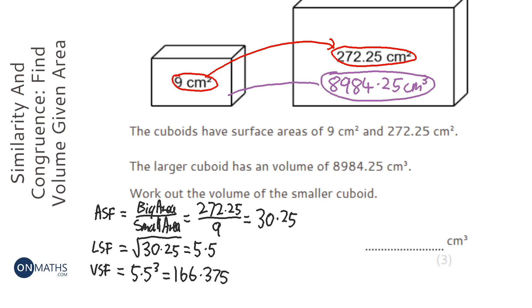So we're going from the bigger cuboid to the smaller one, so we're not going to times it, we're going to divide it by the volume scale factor.